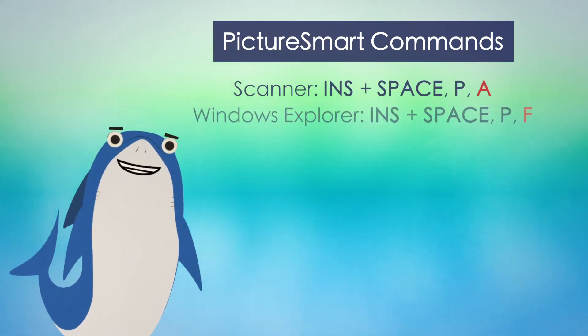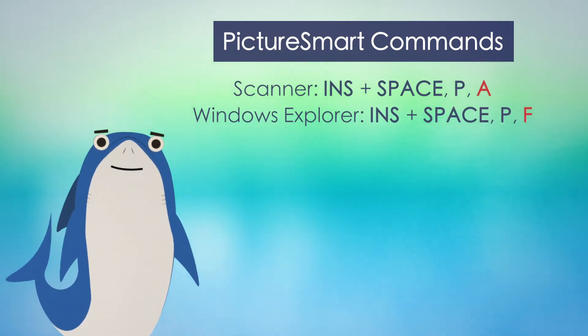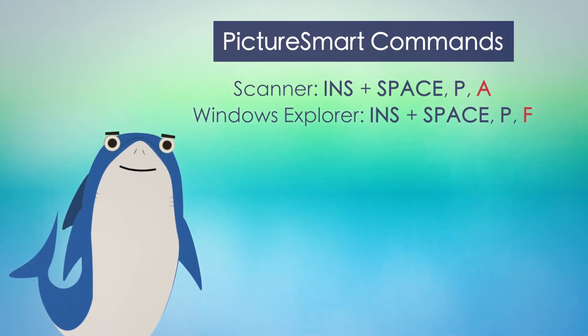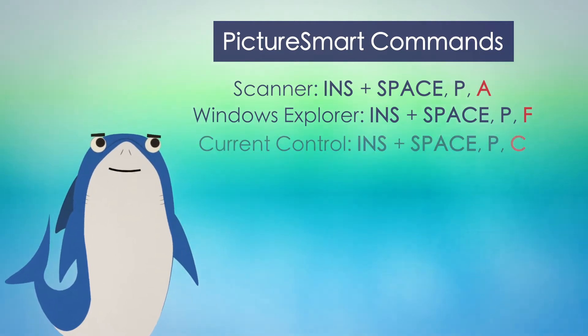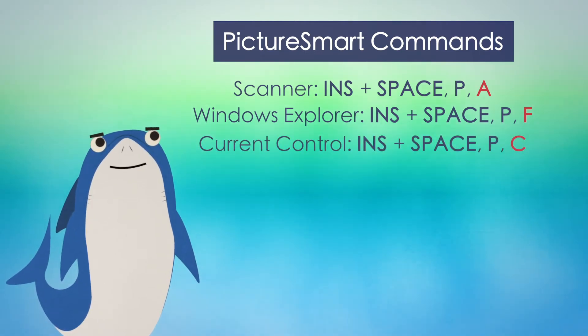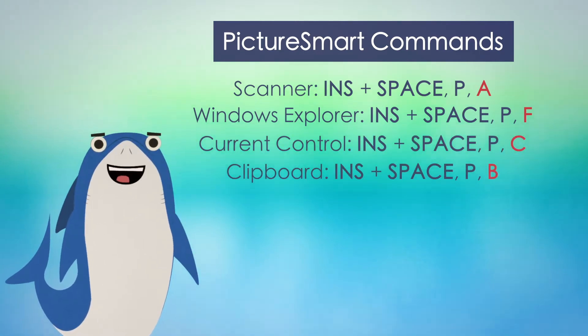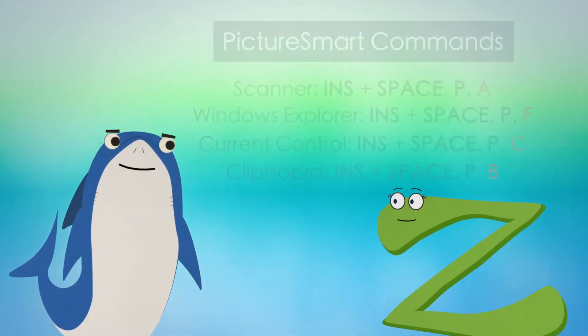To describe a selected image file in Windows Explorer, press F. To describe the current control, press C. Or to describe an image on the Windows clipboard, press B.